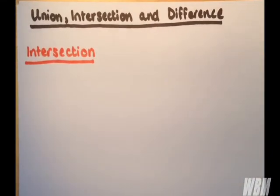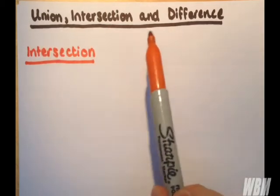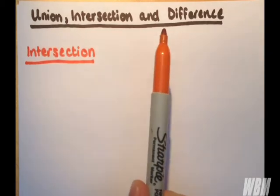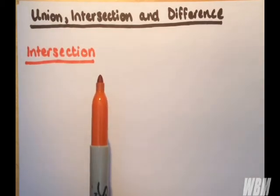Hi guys, continuing our notes on set theory. Today we're going to be looking at union, intersection, and difference. What I'll do is give a very brief overview of each of these and a very brief example as well.